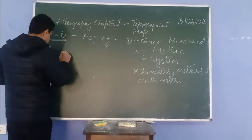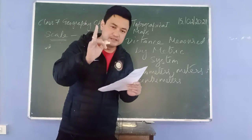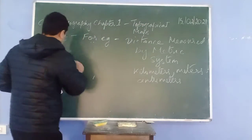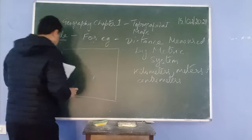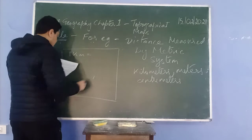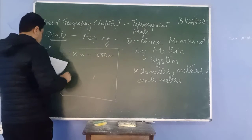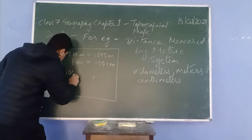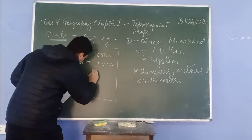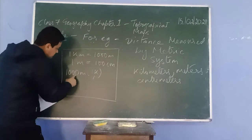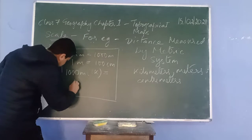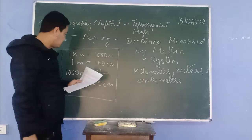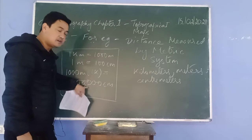There are one thousand meters in one kilometer, and one hundred centimeters in one meter. One kilometer is equal to one thousand meters. One meter is equal to one hundred centimeters. So, one kilometer is one hundred thousand — that is one lakh — centimeters. Remember that.